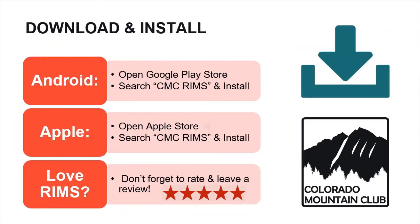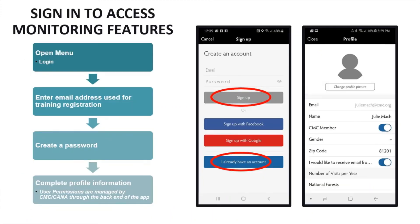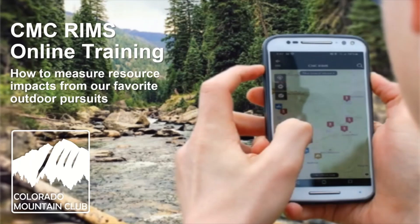If you have not already downloaded the RIMS app, you can do so on your Apple or Android device. Don't forget to rate and leave a review. Once you have downloaded the app, make sure to sign up or sign in using the same email address you used for training registration. You may need to re-sign into your account to see your upgraded volunteer status. Now that you've completed the online training, you are ready to take the quiz to get full access. We will then upgrade your account to a volunteer status to give you full access to all the modules. Thank you for using CMC RIMS.